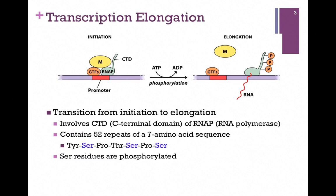So what is the signal for this transition? It involves the C-terminal domain of RNA polymerase, and that's shown in our illustration here. On the left we have initiation: RNA polymerase in green, the extended region is the C-terminal domain, the general transcription factors in orange and mediator in yellow, and they're initiating transcription.